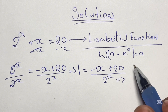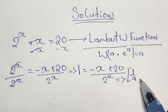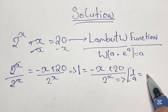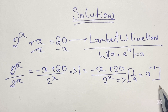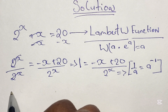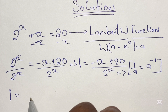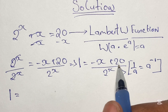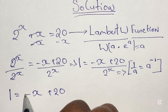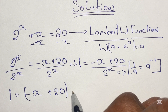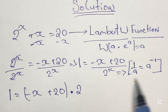Now we can express the division by 2 to the power of x using the law of indices, where we have 1 over a is the same as a to the power of negative 1. So we can rewrite our equation using this power rule. From here we have 1 is equal to negative x plus 20, in brackets, times 2 to the power of negative x.